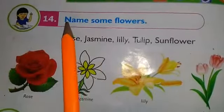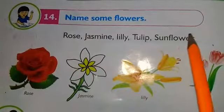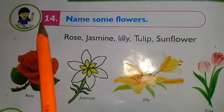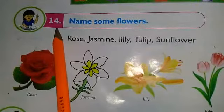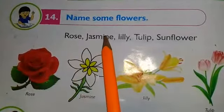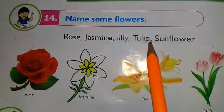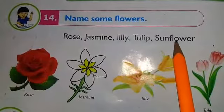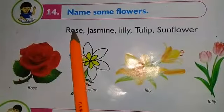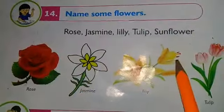As you have learned flower names in the previous question, question number 14 — rose, jasmine, lily, tulip, sunflower — these are different flower names.